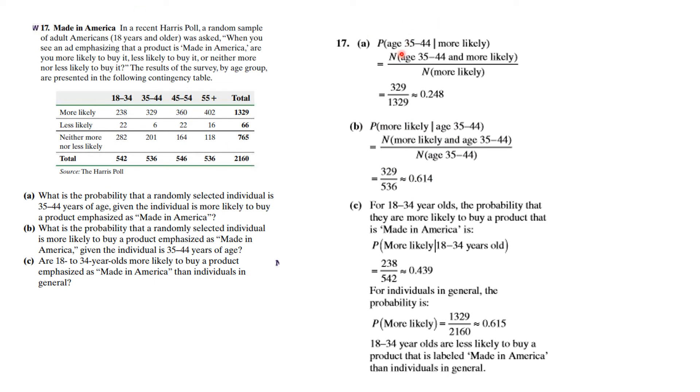The probability that someone is age in this age bracket given that they voted more likely is the probability in that age bracket and more likely divided by the number in more likely. You do the arithmetic and you get this.